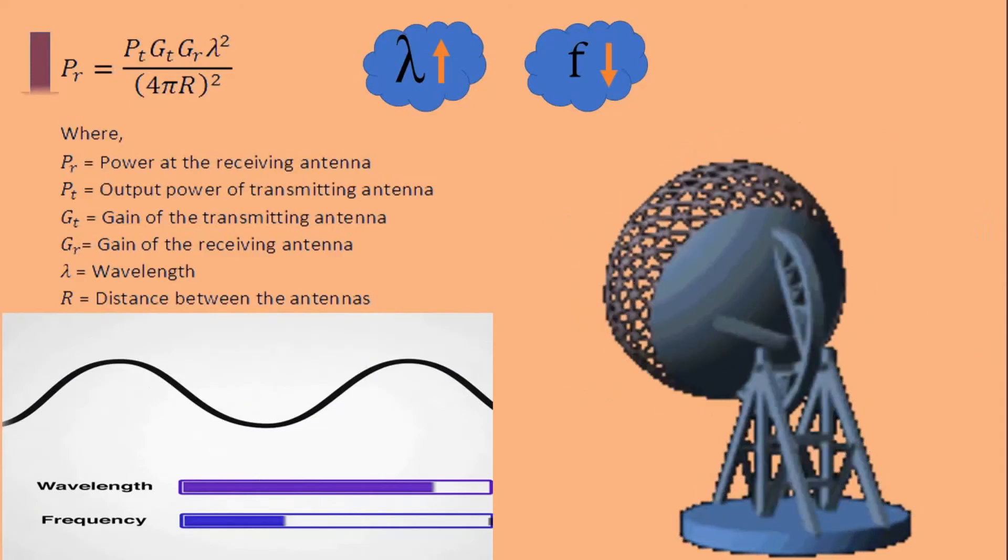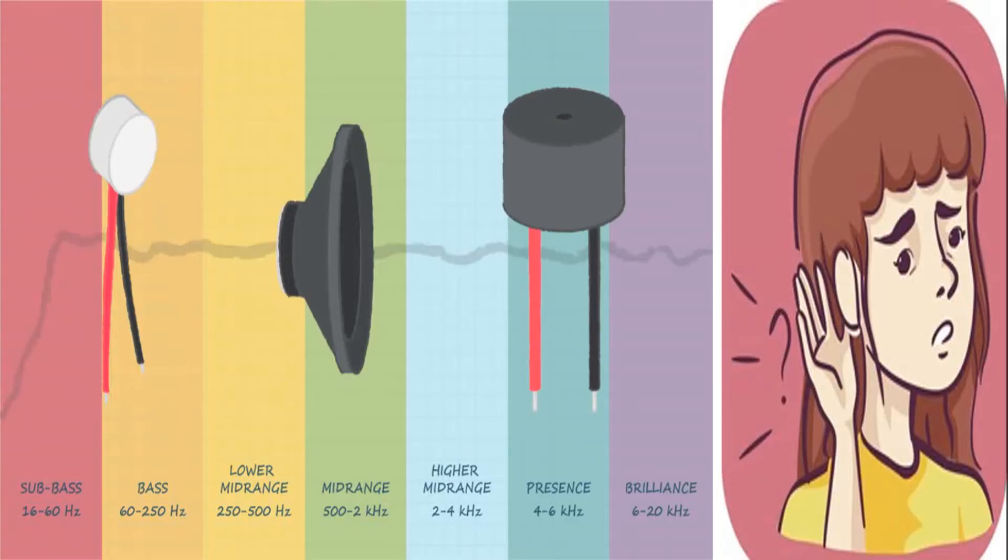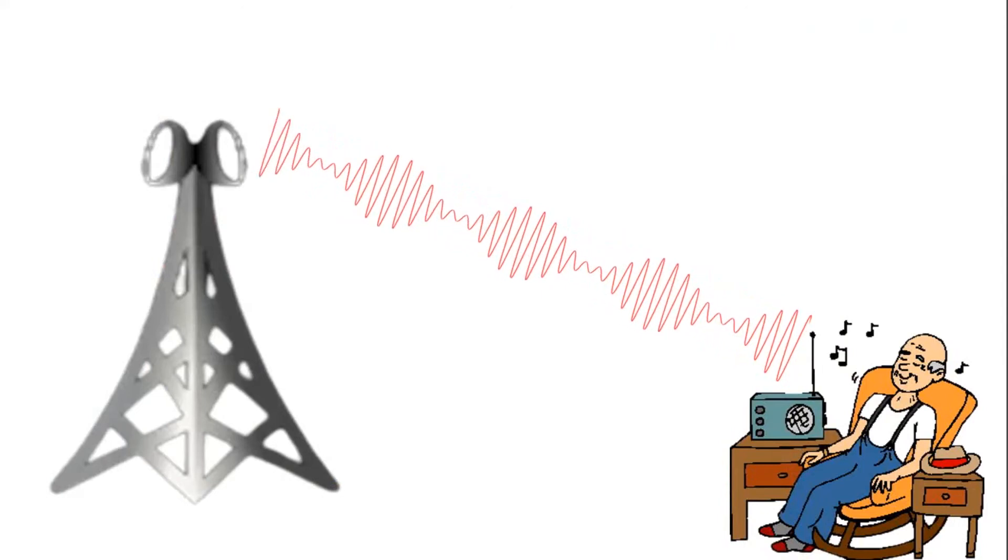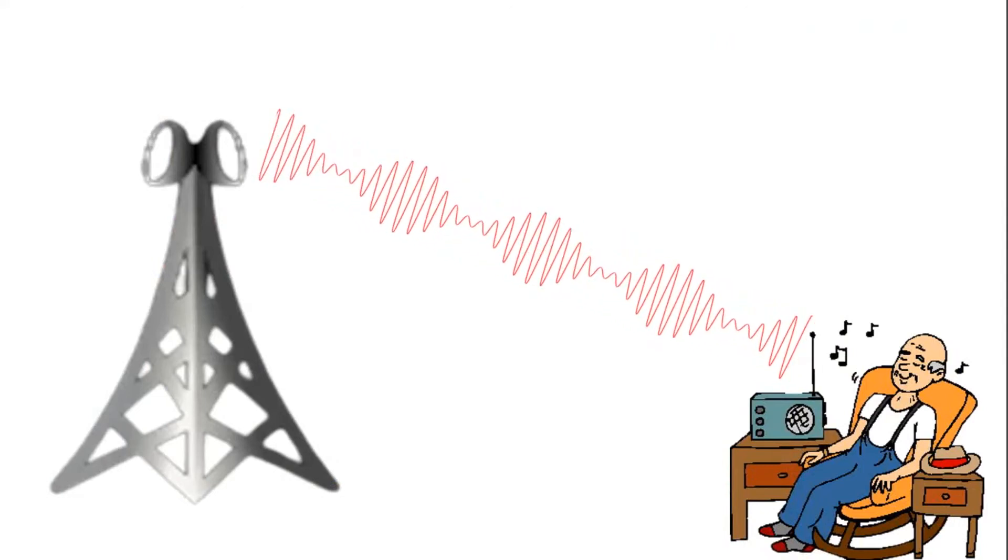To avoid this, we cannot just increase the frequency of the message signal because as we know the entire audible range of frequency is 20 Hz to 20 kHz. That's why we use modulation and superimpose low frequency message signal into high frequency carrier signal.